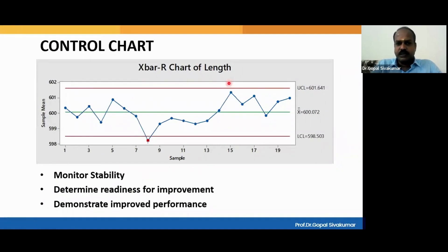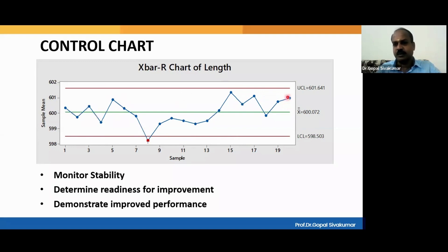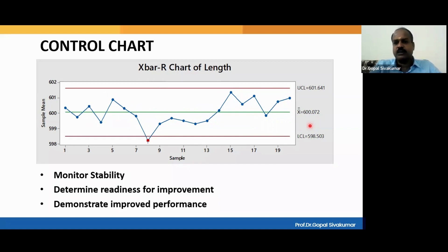What you are seeing on my screen is a control chart — particularly a sample mean chart, we call it X bar chart. Any control chart will generally have three lines: a center line, represented in green color; above the center line, a red color line called the upper control limit; and below the center line, one more line called the lower control limit. The points here are nothing but the subgroup means — the subgroup averages plotted in the control chart with respect to the center line and the control limits.